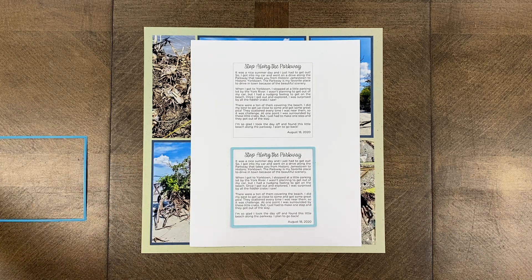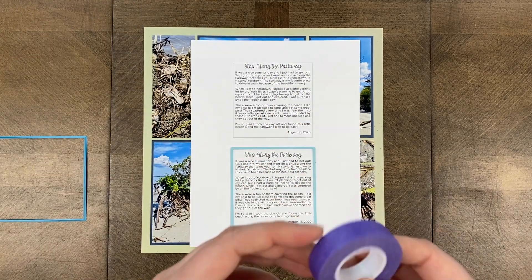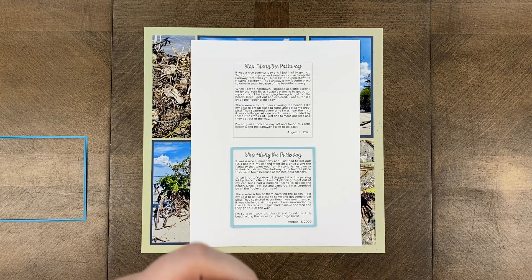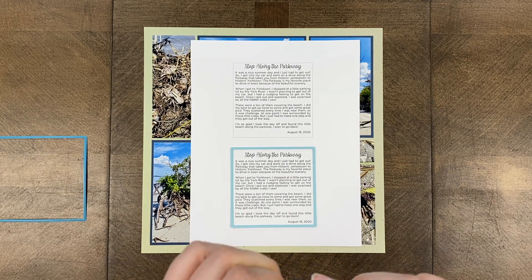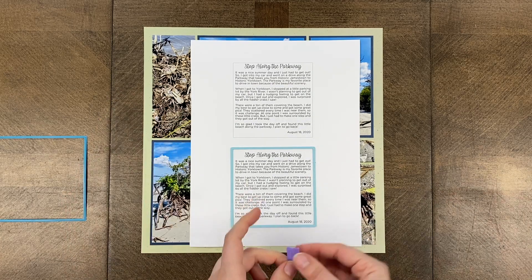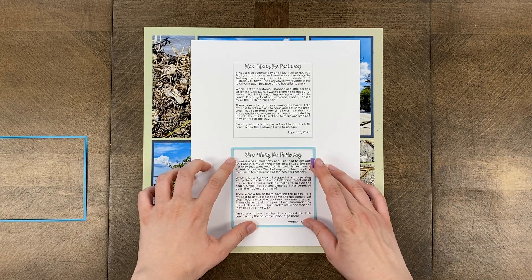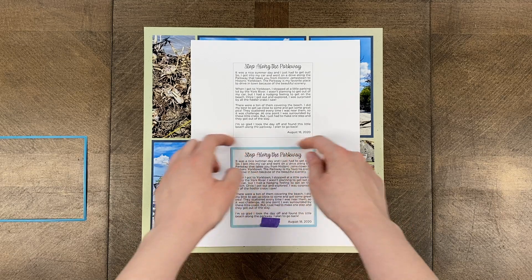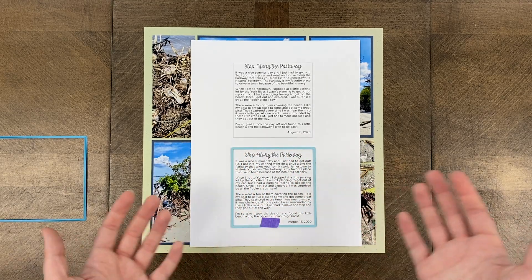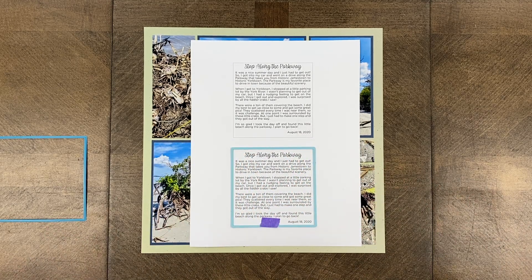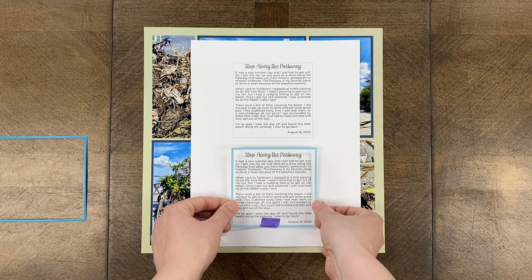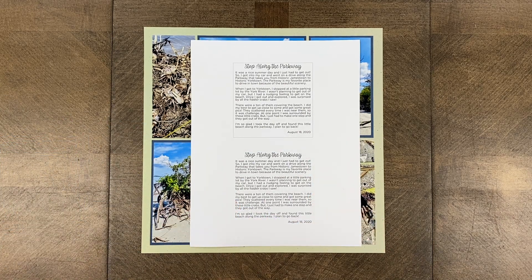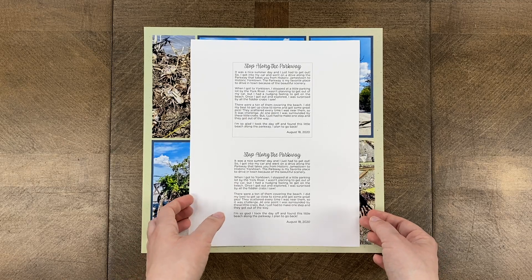I definitely recommend using washi tape to secure the journaling to the die. You may even want to use more than one piece. Then I would cut around here and roll it through the machine and you're done. So that's really nice if you want to use dies — or you can hand cut, which I'm going to show you.